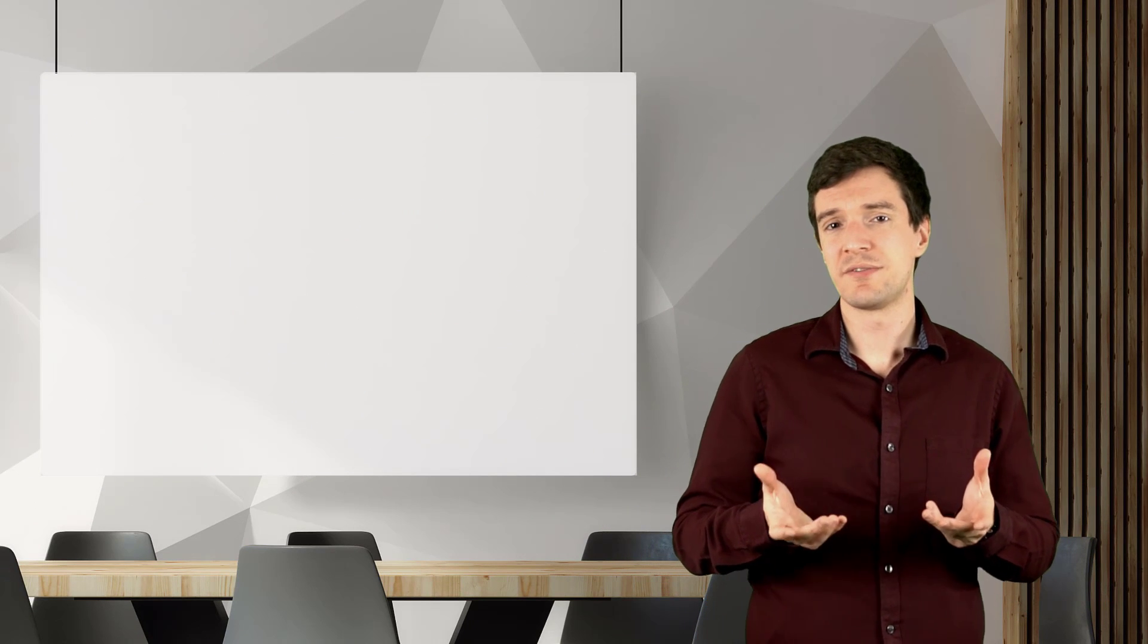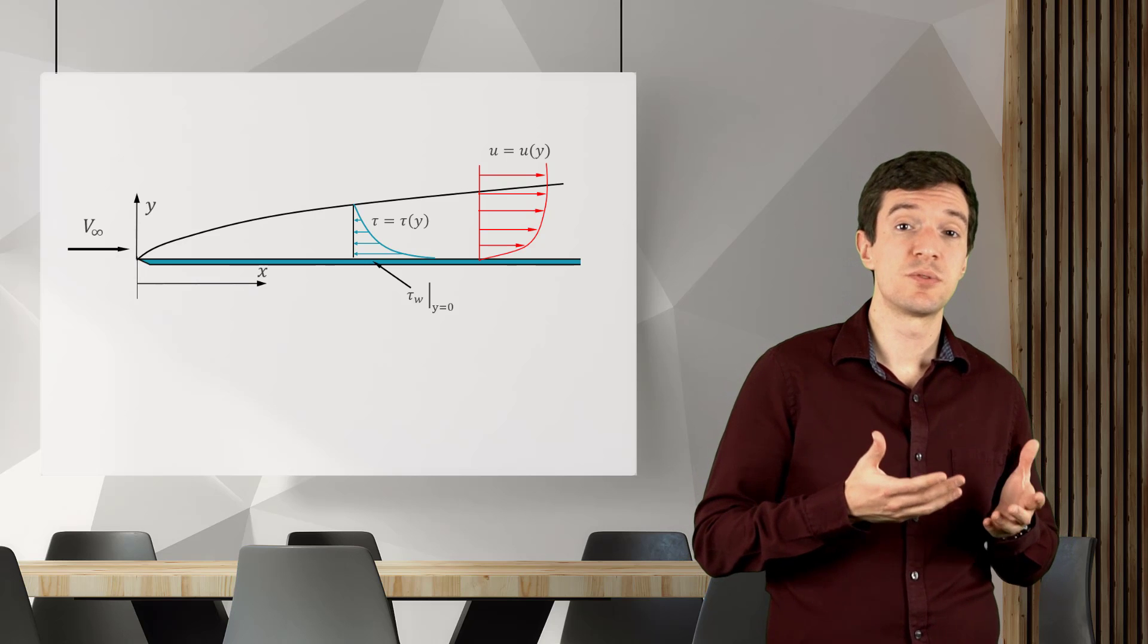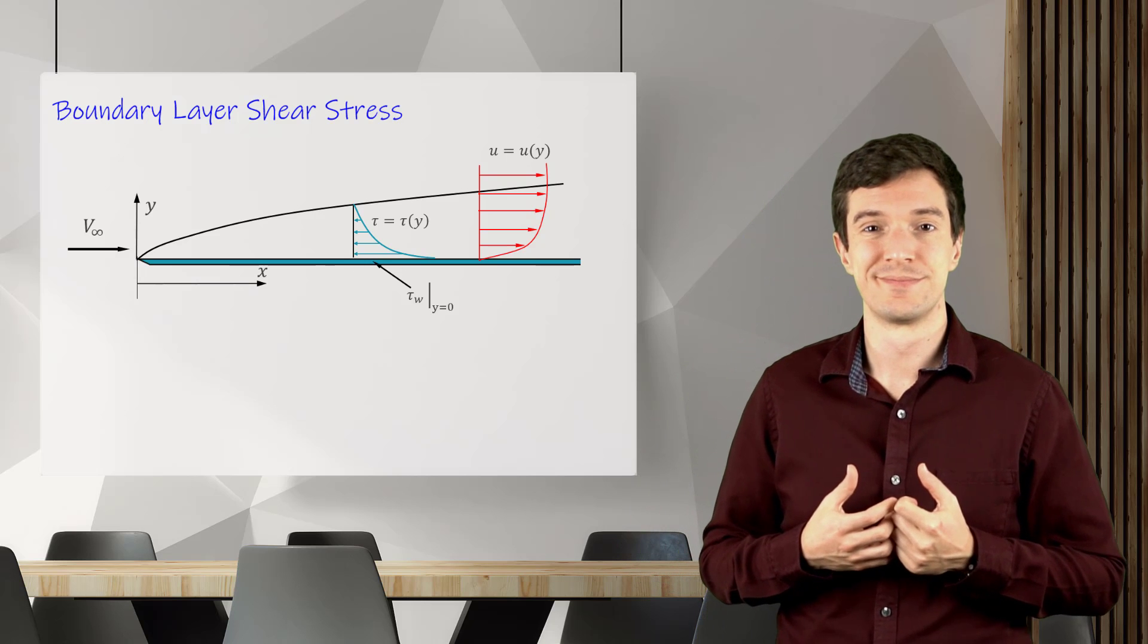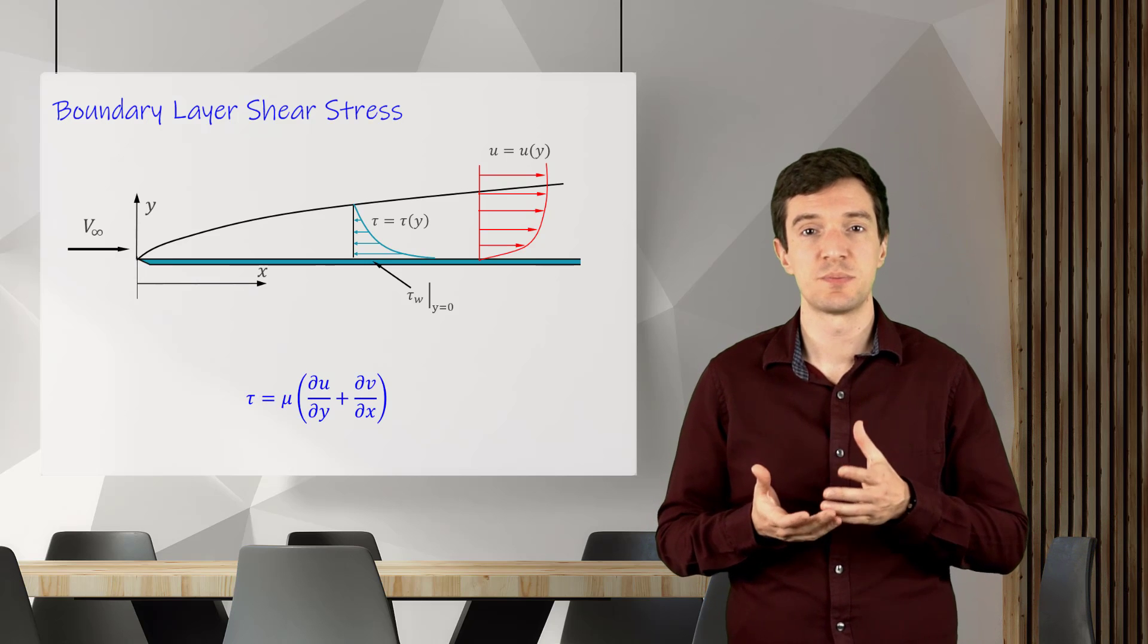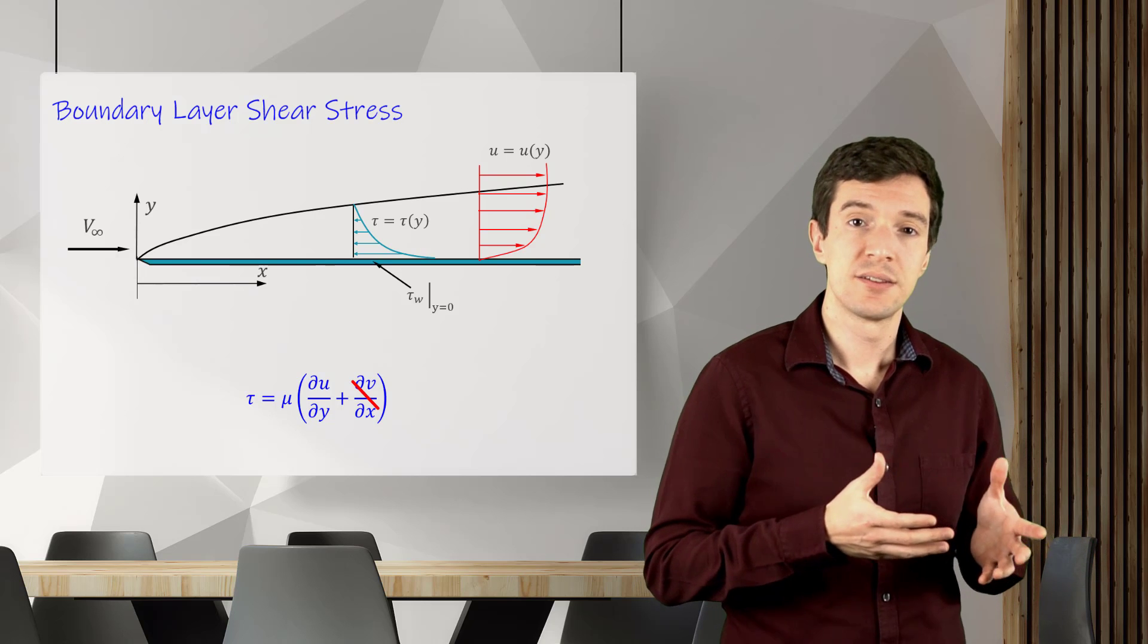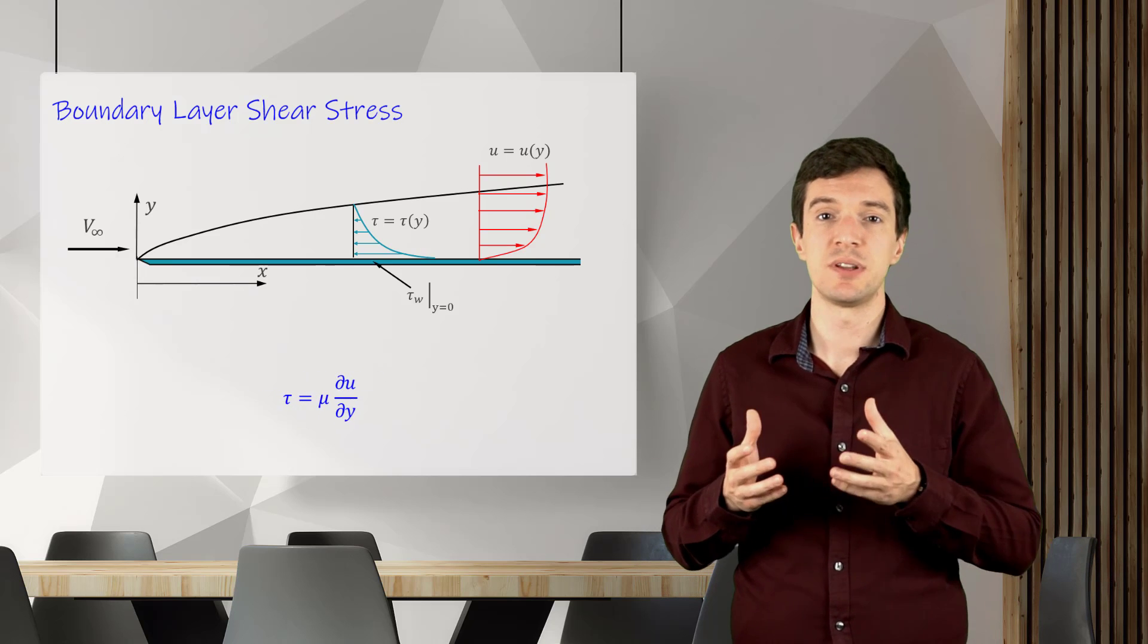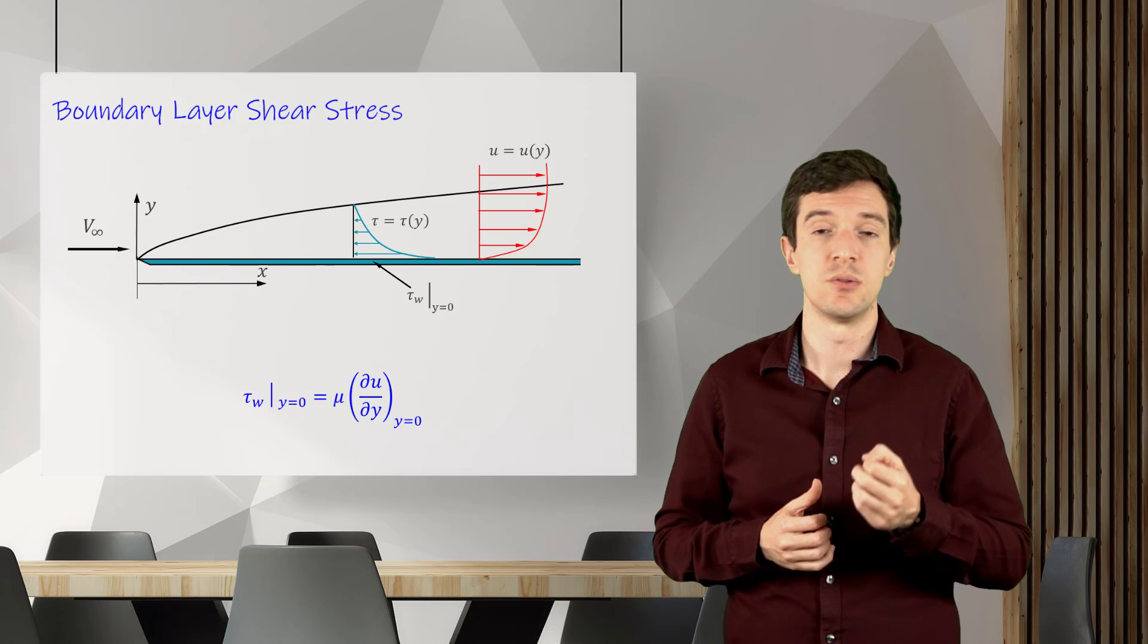So, we have derived the governing equations for the laminar boundary layer, and we can now solve them to obtain the velocity profile and estimate the shear stress acting on the wall. For two-dimensional flow, the shear stress is expressed in this form. Based on the dimensional analysis performed before, we can neglect the derivative of the normal velocity and obtain the simplified expression that can be used to estimate the wall shear stress.